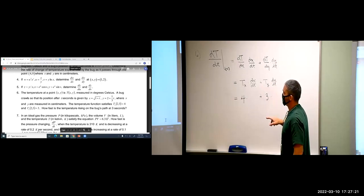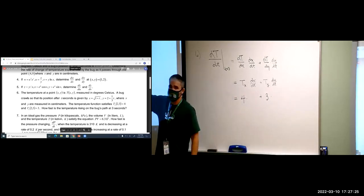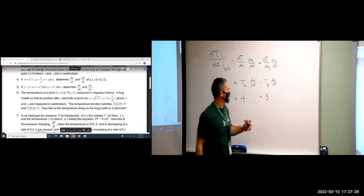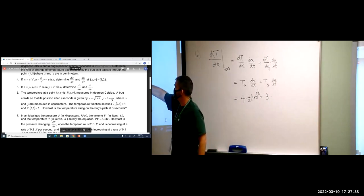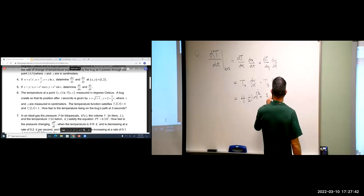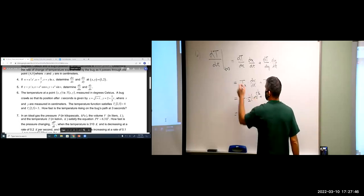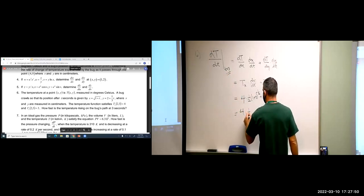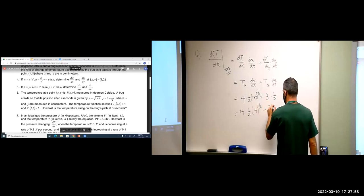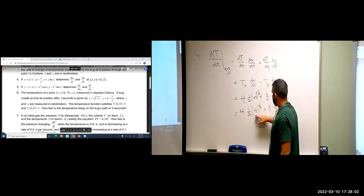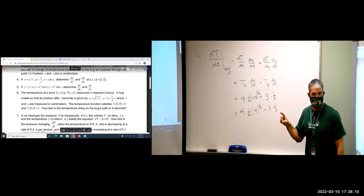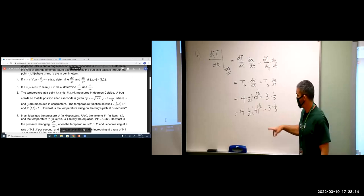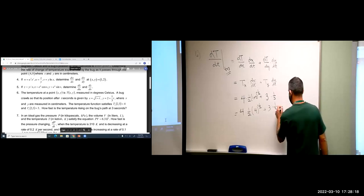We still need to find dx/dt and dy/dt. dx/dt is a single-variable calculus problem: derivative of (1 + t)^(1/2) is (1/2)(1 + t)^(-1/2). The derivative for y gives 1/3 since that's linear. Plugging in t = 3: we get 4 times (1/2) times (1 + 3)^(-1/2) plus 3 times (1/3). 4^(-1/2) is 1/2, so we have 4 times 1/2 times 1/2, which is 1, and 3 times 1/3, which is also 1.